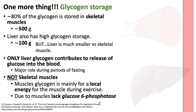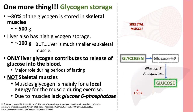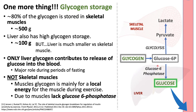The reason muscle glycogen cannot contribute to blood glucose is that muscles lack glucose-6-phosphatase, the enzyme that converts glucose-6-phosphate into free glucose. In the liver, glycogen is converted to glucose-6-phosphate and then to glucose via glucose-6-phosphatase, which can then enter the blood. In muscle, without this enzyme, the pathway proceeds through glycolysis to pyruvate and ultimately to lactate, which is released into the blood instead.